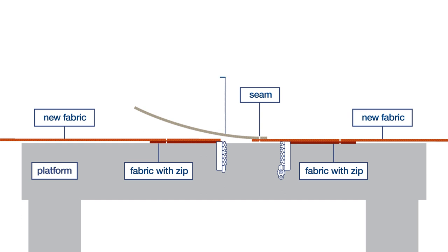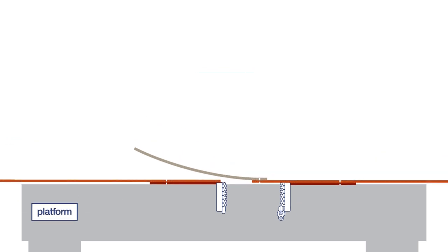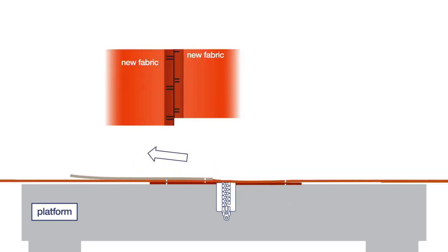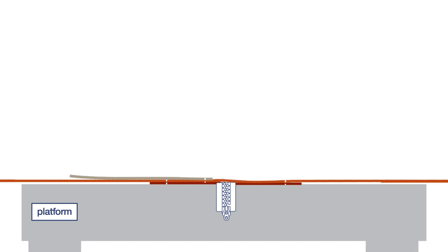On the leading edge of the fabric you'll find a leader, a piece of extra fabric. Use the leader to pull the fabric ends close to each other and align them. Fold the leader back and close the zip.